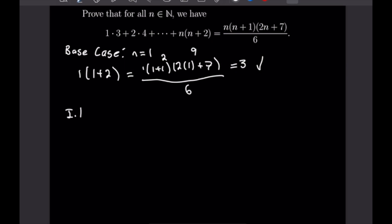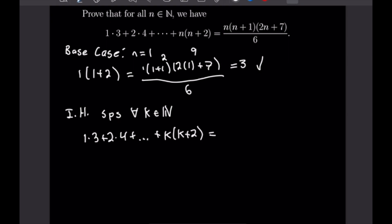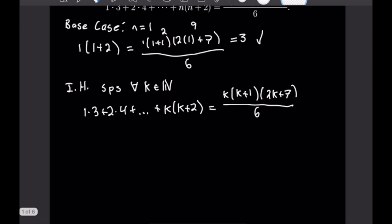Now we want to state our induction hypothesis: suppose for all k which is a natural number the following equality holds — 1 times 3 plus 2 times 4 plus all the way up to k times k plus 2 is equal to k times k plus 1 times 2k plus 7 all over 6. From here we want to consider the next case, which will be the k plus first case.